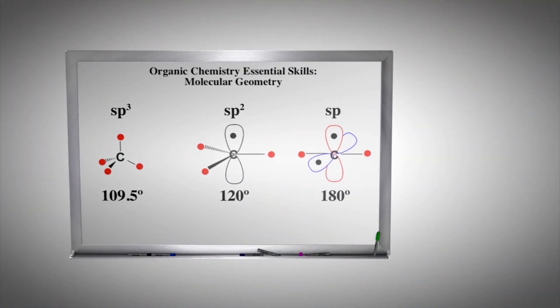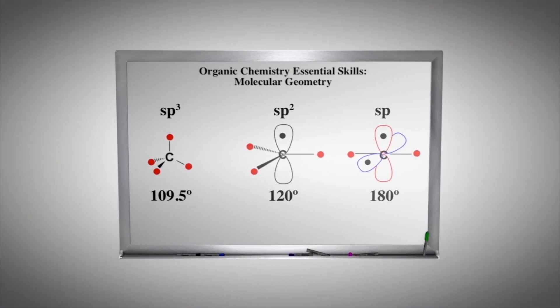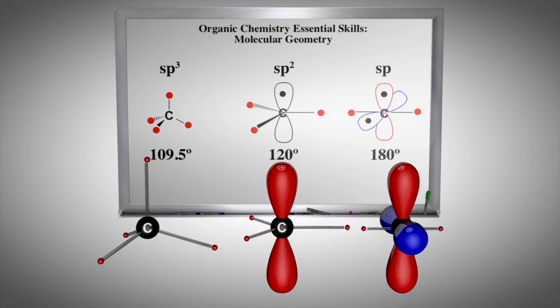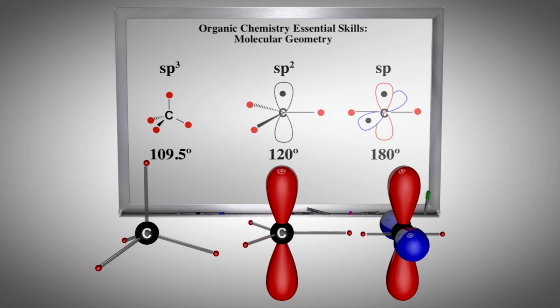To introduce the concepts of molecular geometry, we will first focus on the carbon atom. Your instructor will often draw the sp3, sp2, and sp hybridized carbon on the whiteboard as shown. The solid lines in these drawings are in the plane of the board, the wedges are coming out of the plane of the board, and dashed lines are going back behind the plane of the board.